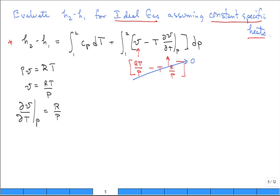So what we find is for an ideal gas, H2 minus H1 is equal to the integral of C sub P dt from 1 to 2. And if you assume constant specific heats, you get that it's equal to C sub P, T2 minus T1.